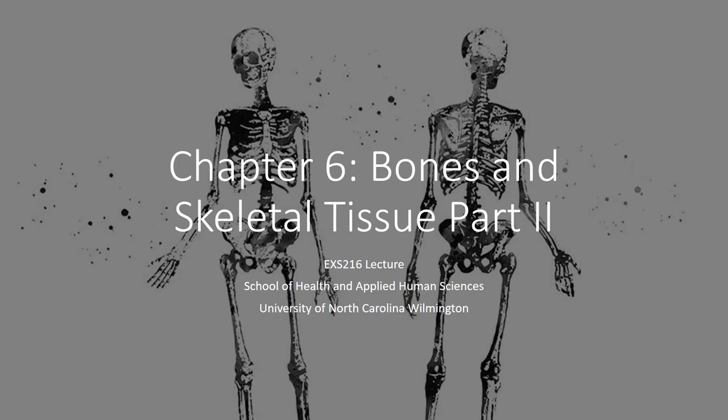In chapter 6, part 2, we'll pick up where we left off by discussing the microscopic anatomy of bone. We'll take a deeper look at the different cells of bone tissue. From there, we will move on to the osteon and chemical composition of bone, how the bony skeleton forms and the necessary steps, and then we'll get into fracture repair and finish up with two different types of bone disorders.